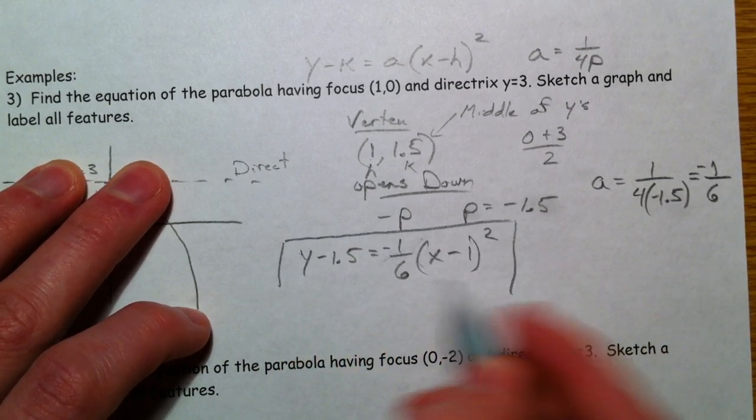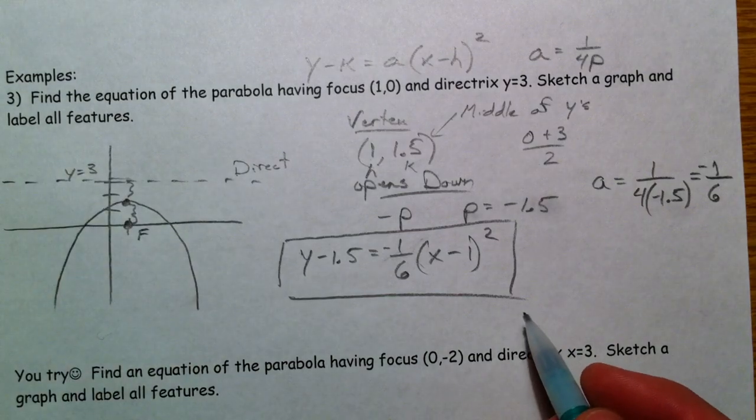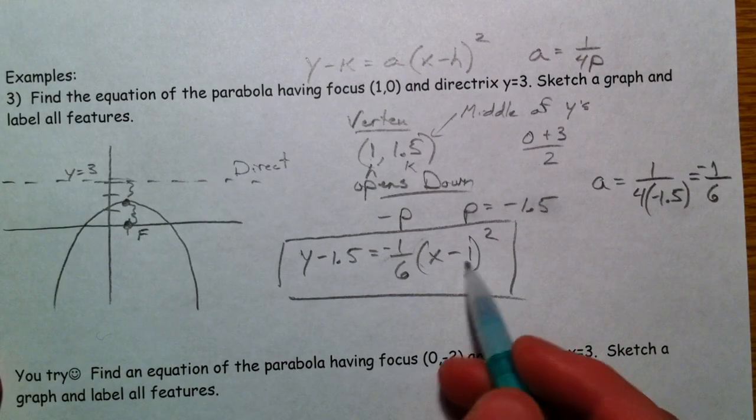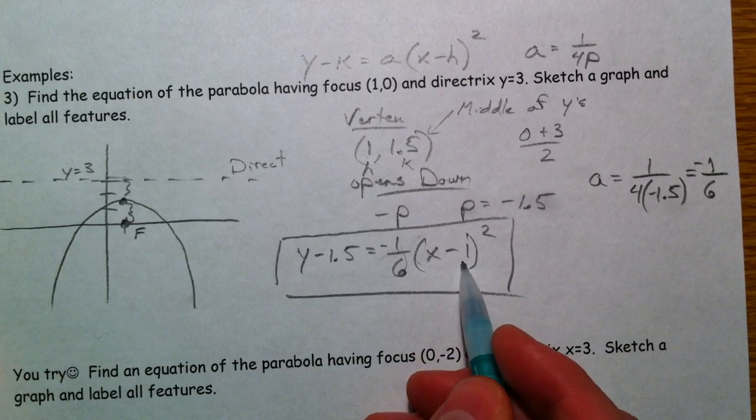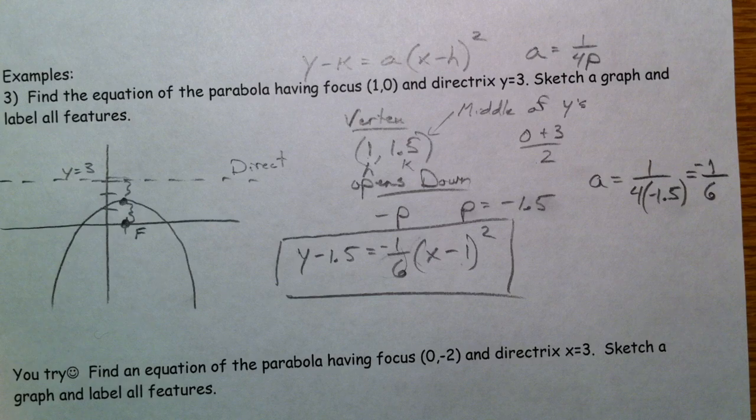And that is the equation of our parabola. It's nice because you can tell which direction it opens down, and the x squared, and so the vertex is (1, positive 1.5).